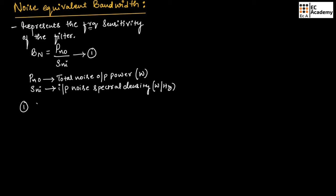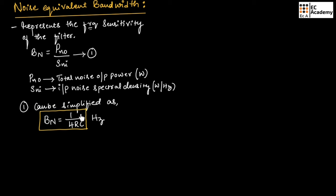Equation 1 can be simplified as BN is equal to 1 by 4RC, which is in terms of Hertz. We need to prove this expression and show that the noise equivalent bandwidth can be written as 1 divided by 4RC, where R is the resistor and C is the capacitor.